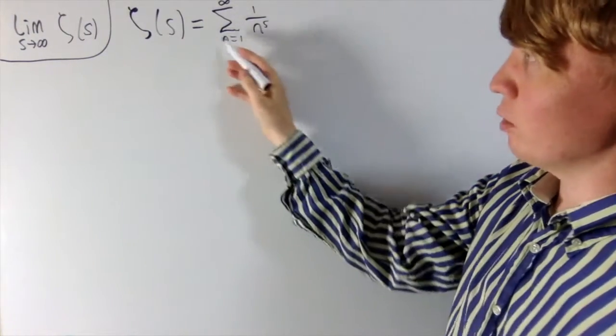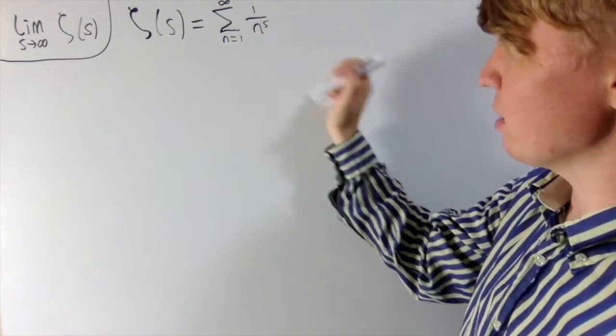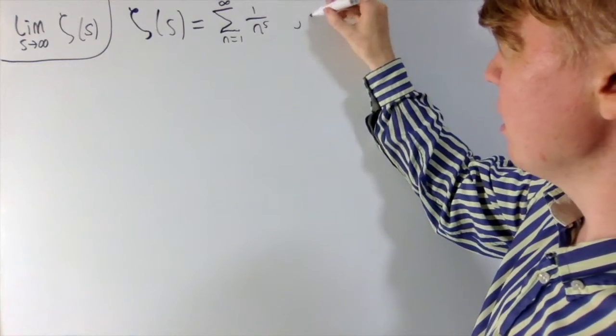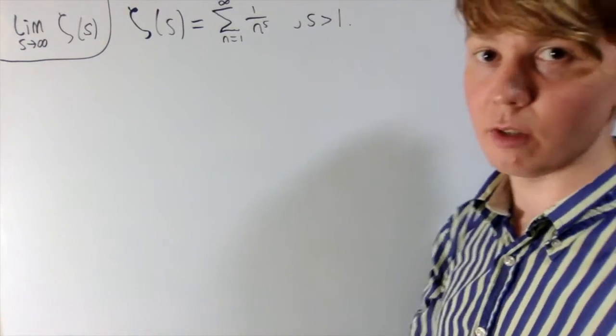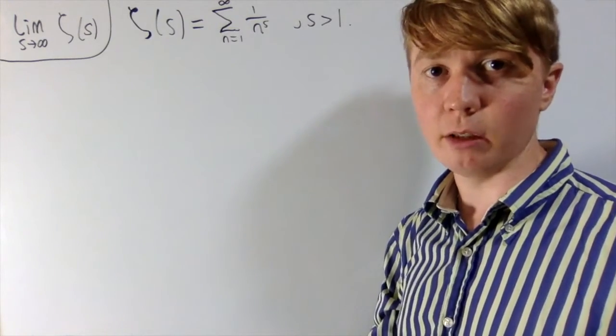So we define the Riemann zeta function, zeta of s, as this sum of 1 over n to the s. And here, s has to be greater than 1 in order for this to converge. We're just saying that s is a real number.